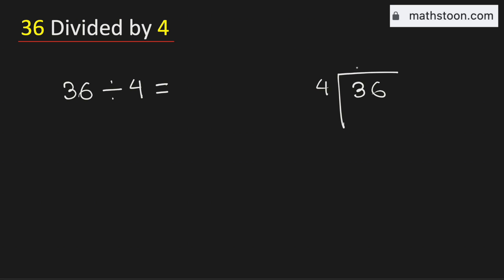From the multiplication table of 4, we know that 4 times 9 is 36. If you subtract, you will get 0.